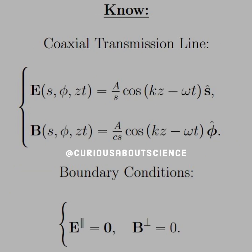All right, so for a coaxial transmission line, we have E in cylindrical coordinates. I don't know why I have no comma there after z, but four dimensions: s, phi, z, and t. And then we have A, some constant, over s, cosine kz minus omega t in the s-hat direction.